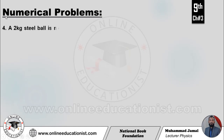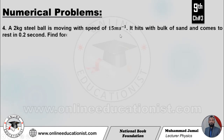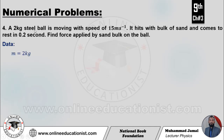Fourth problem hai. A 2 kg steel ball is moving with speed of 15 meter per second. Ek 2 kg ball hai jo 15 m/s ki speed se move kar rahi hai. It hits a bulk of sand and comes to rest in 0.2 seconds. Find the force applied by sand bulk on the ball. Data mein m equal to 2 kg, initial velocity 15 m/s, final velocity 0 (comes to rest), time t equal to 0.2 seconds. Force F calculate karni hai.